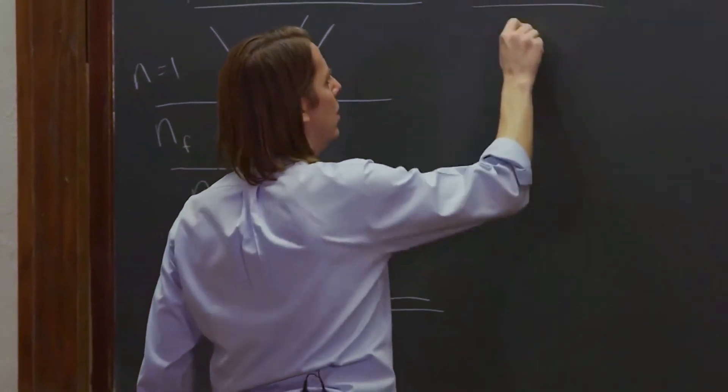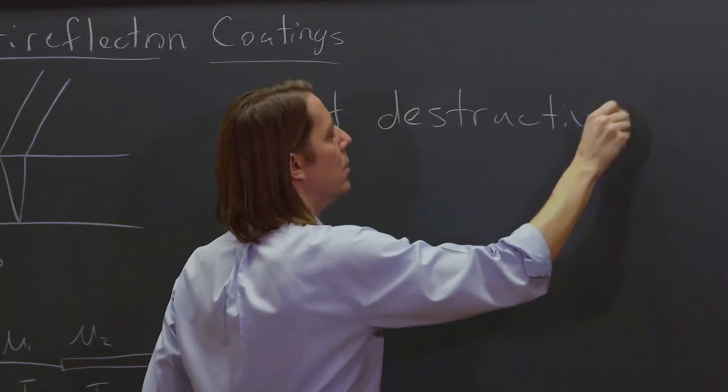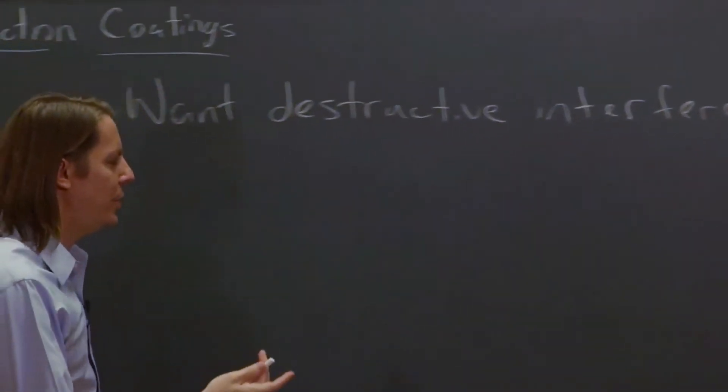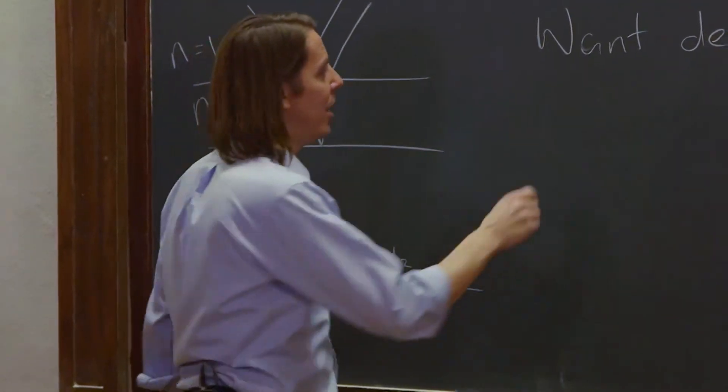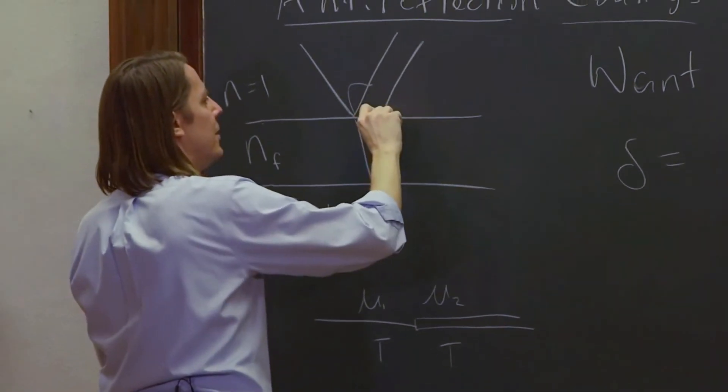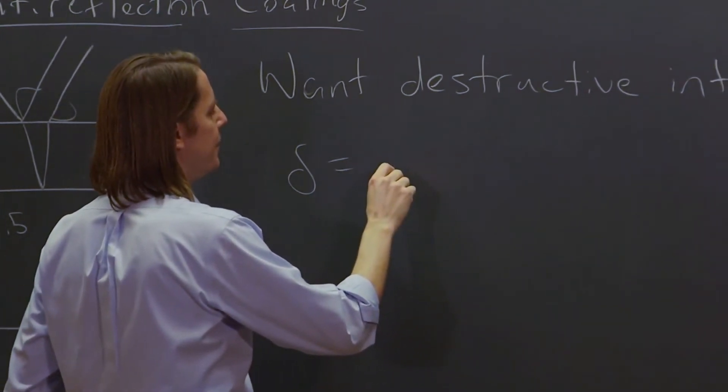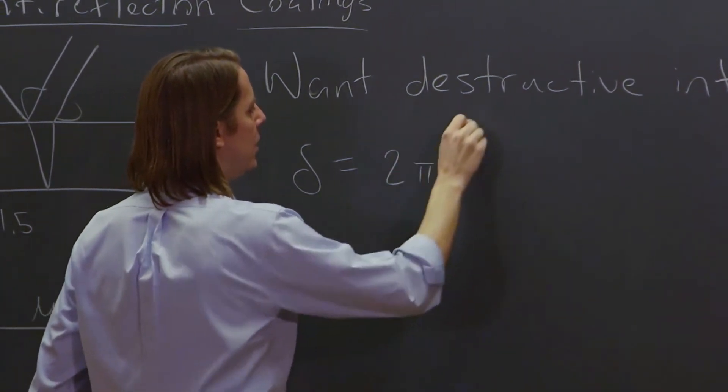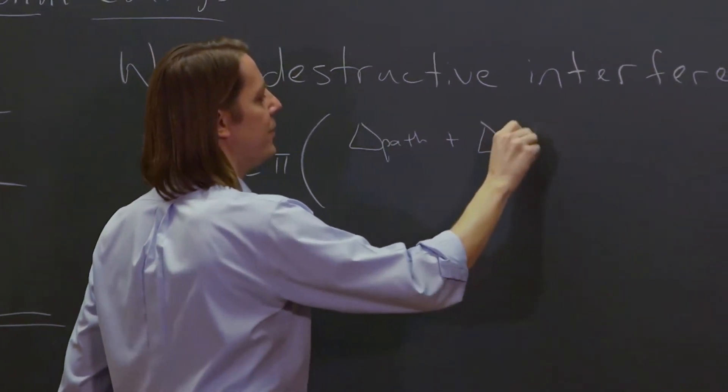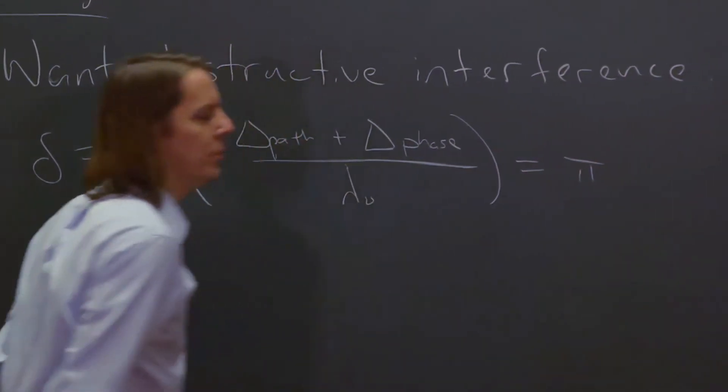We want destructive interference. So we need the delta for this situation to be equal to π. We want them to be π out of phase. This one's at a maximum, this one's at a minimum. They want to be π out of phase. So we want it to be, let's see, 2π times the path difference plus the phase difference due to reflection over λ₀. You want that to be equal to π.